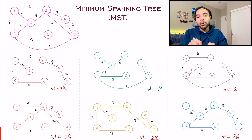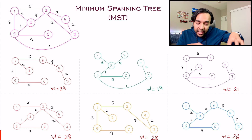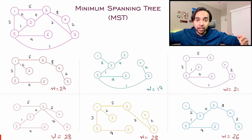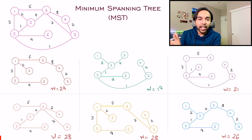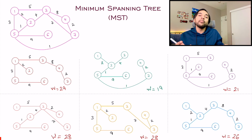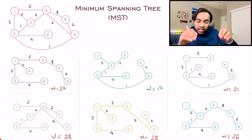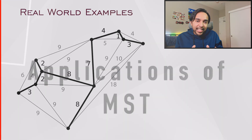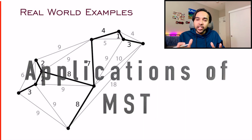Of course, there are certain algorithms by which you can derive it more easily, because this brute force way — finding out all the different possible combinations and then finding their weights — is definitely going to take a lot of time. We are going to cover the two most famous ways of finding the minimum spanning tree in my further videos. For now, just focus on solidifying your concept of how a spanning tree is derived and what a minimum spanning tree actually means.